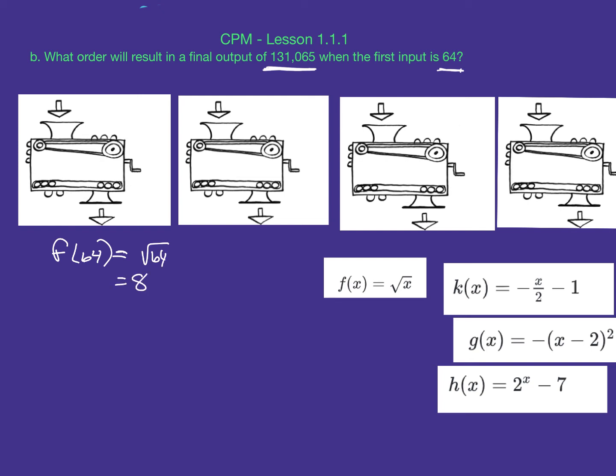F(64): the square root of 64 is 8. So my input was 64, my output for F is 8. Now I need to look at these three equations and figure out which one won't give me a fraction or something outlandish. If I put 8 into g(x), I'm going to get negative 36, which I could probably use. So g(8) = -(8-2)² = -6² = -36.